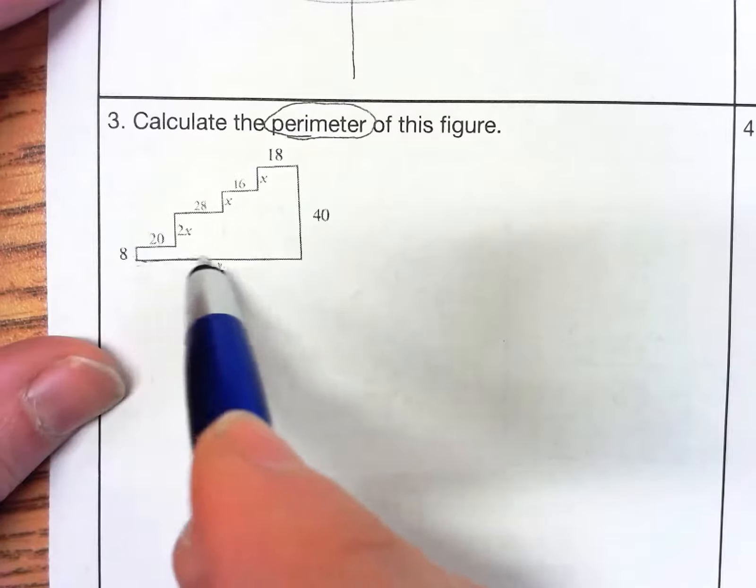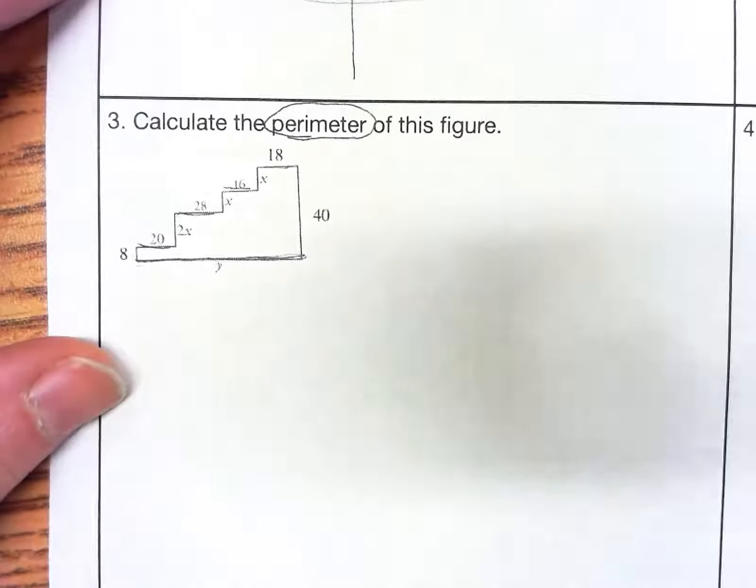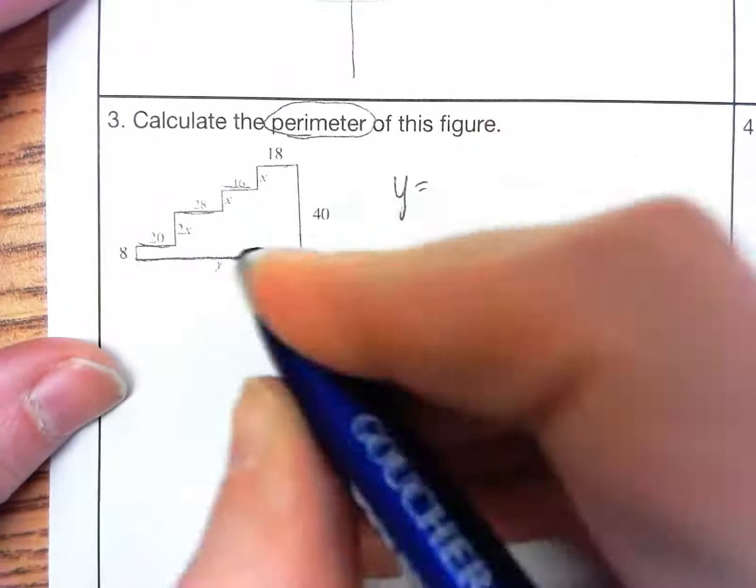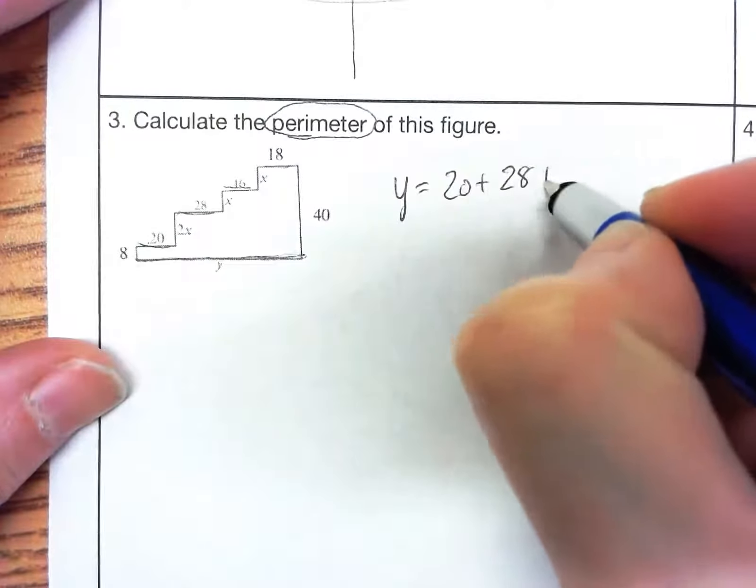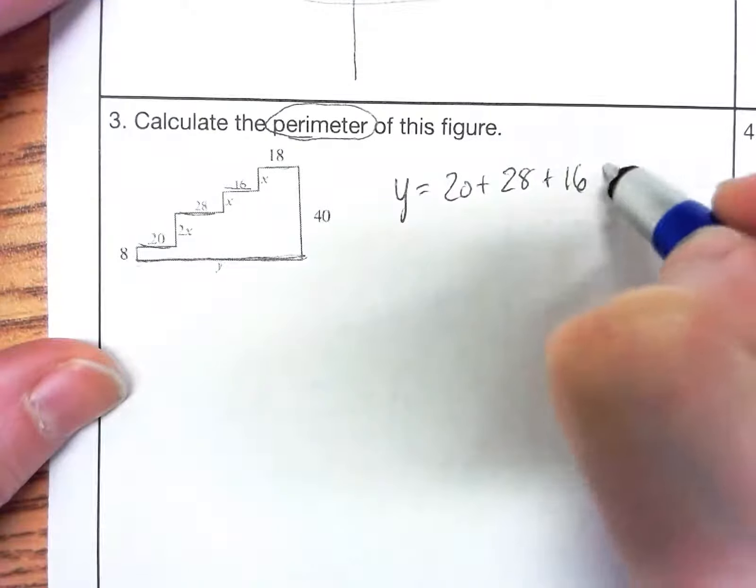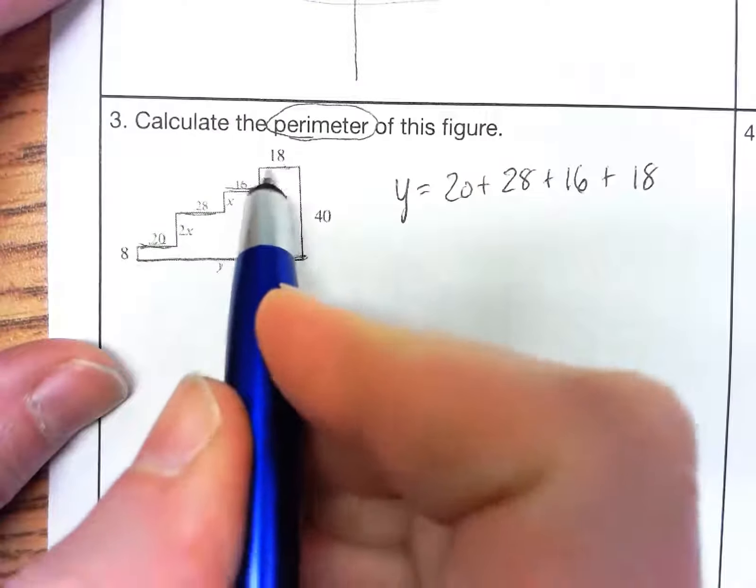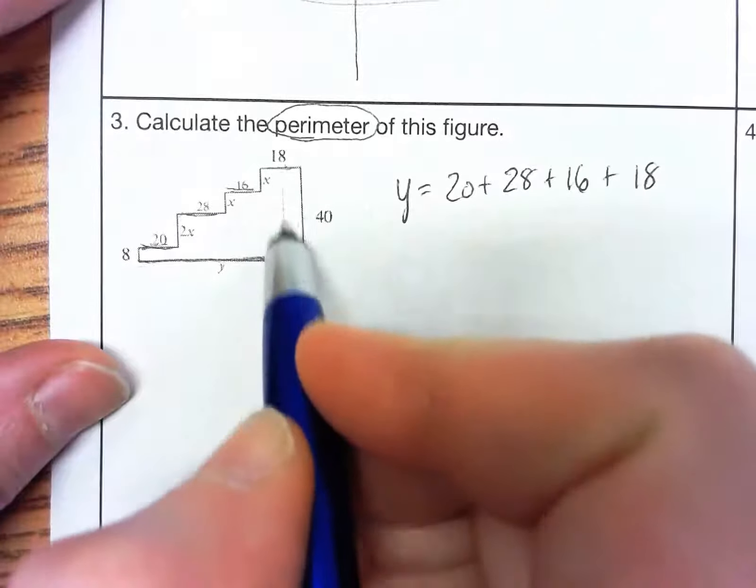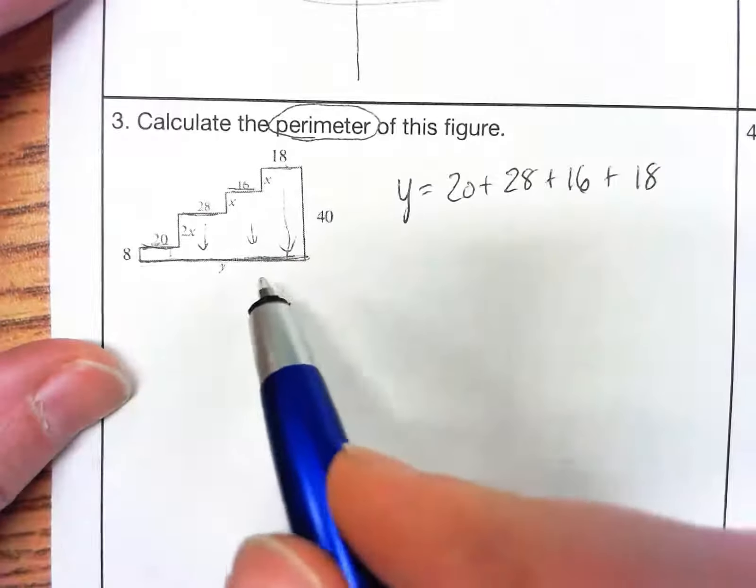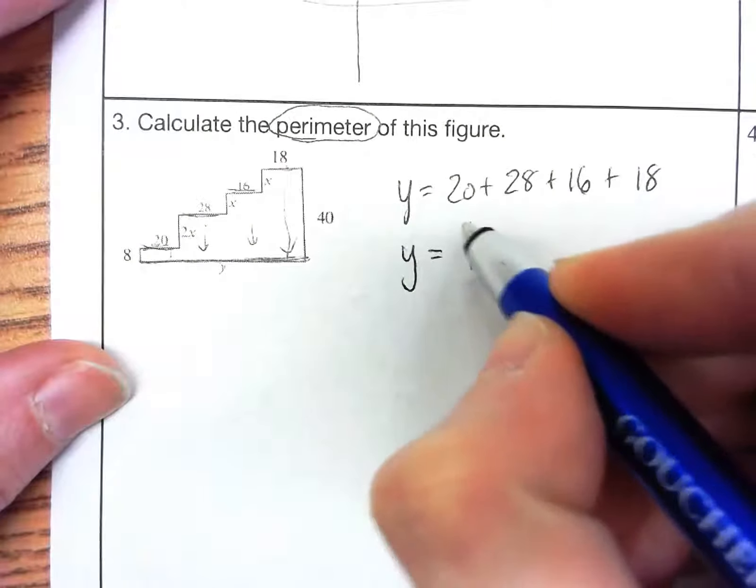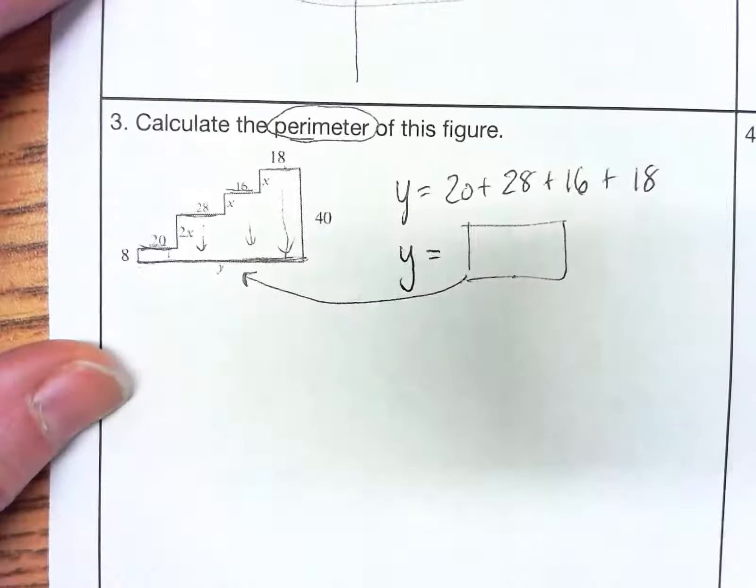We know that y, which is this whole side right here, is equal to this plus this plus this plus this. So we can say y equals 20 plus 28 plus 16 plus 18 because those are all going the same direction as y. And so if you moved each one of them down, you would have a full line that equals y. So on your calculator, you're going to go ahead and add that up and get whatever number is here. That number gets plugged in there.